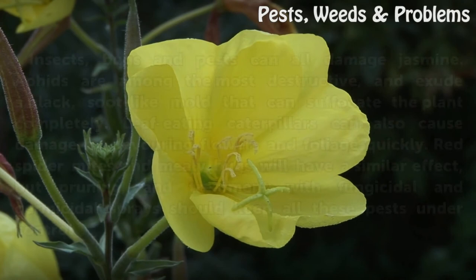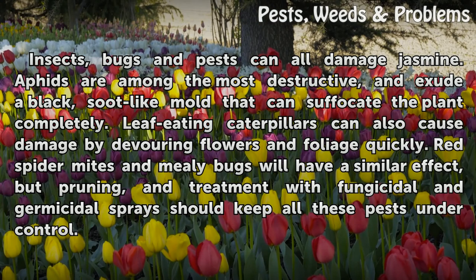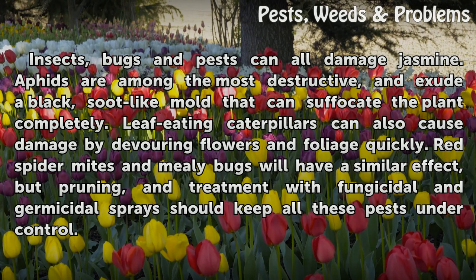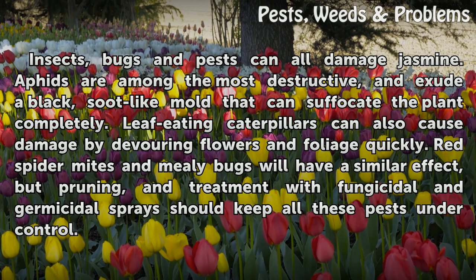Pests. Insects, bugs and pests can all damage jasmine. Aphids are among the most destructive, and exude a plaque, soot-like mold that can suffocate the plant completely. Leaf-eating caterpillars can also cause damage by devouring flowers and foliage quickly. Red spider mites and mealy bugs will have a similar effect, but pruning and treatment with fungicidal and germicidal sprays should keep all these pests under control.